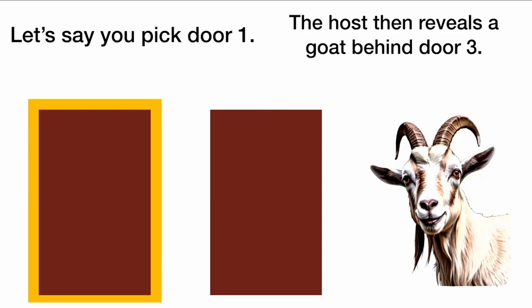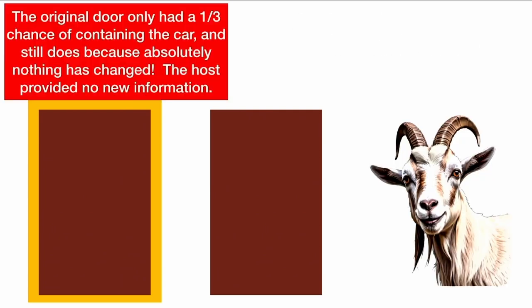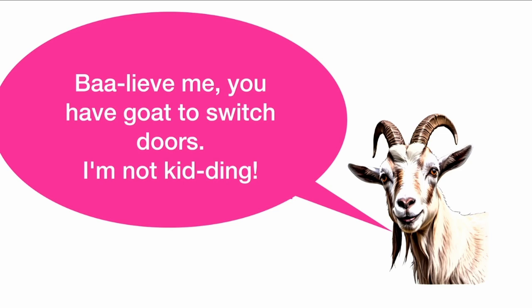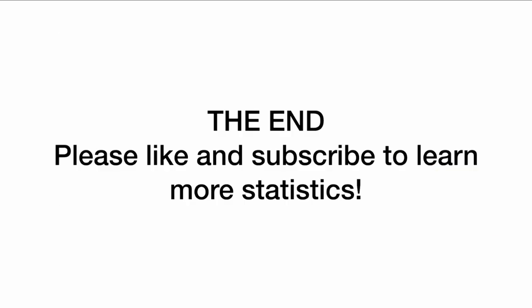So back to the original problem with three doors. Let's say you pick door one. The host then reveals a goat behind door three. The original door only had a one-third chance of containing the car, and still does, because absolutely nothing has changed — the host provided no new information. These two doors still have a two-thirds chance of containing the car, and by revealing the goat, the host pointed you to the door that would contain the car. So believe me, you have goat to switch doors. That's the end. Please like and subscribe to learn more statistics.